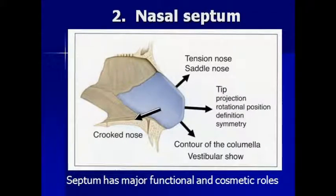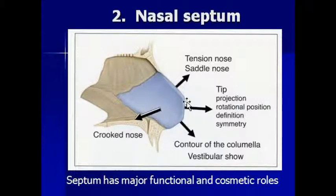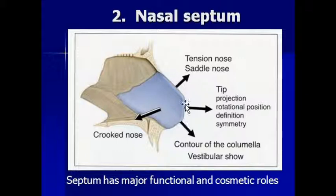The nasal septum is the second area. We did describe this as the partition between the two sides of the nose, but it serves lots of other functions. It serves as a structural wall that holds up the nose. So if the bridge has collapsed, you see a saddle or depression here. If the septum is overdeveloped, you can see a bump in this area. If the septum toward the tip angles toward one side or the other, you may see a crooked nose.